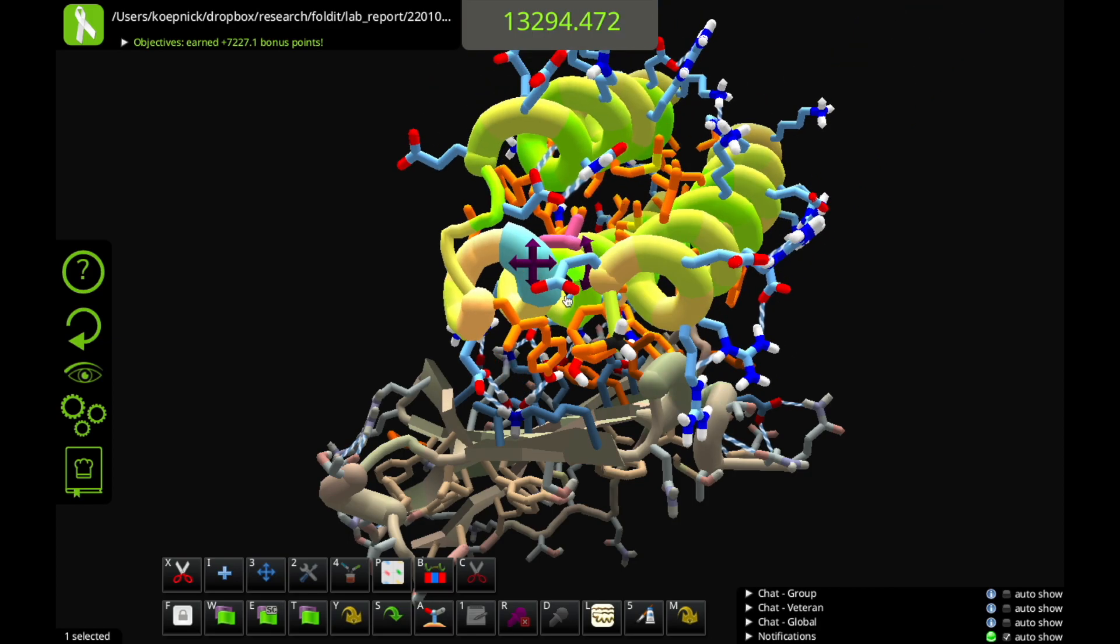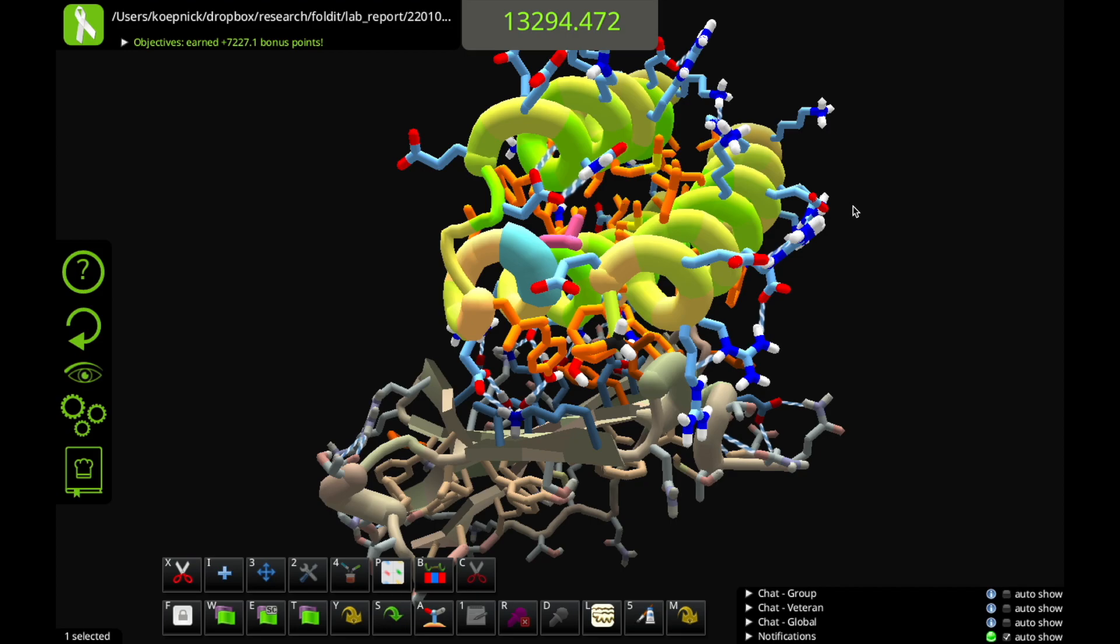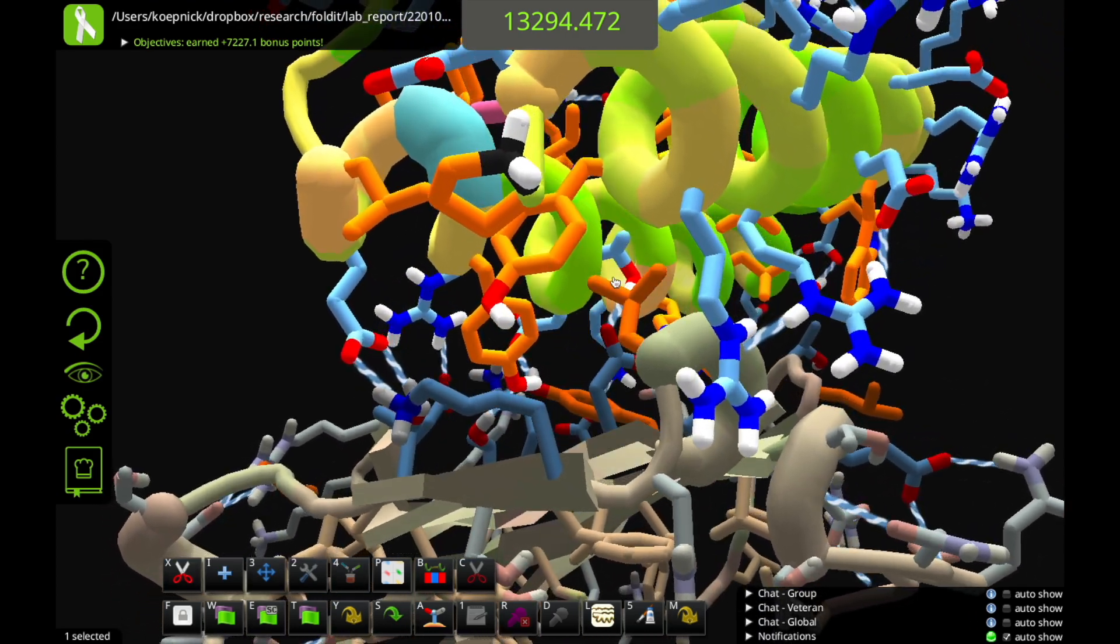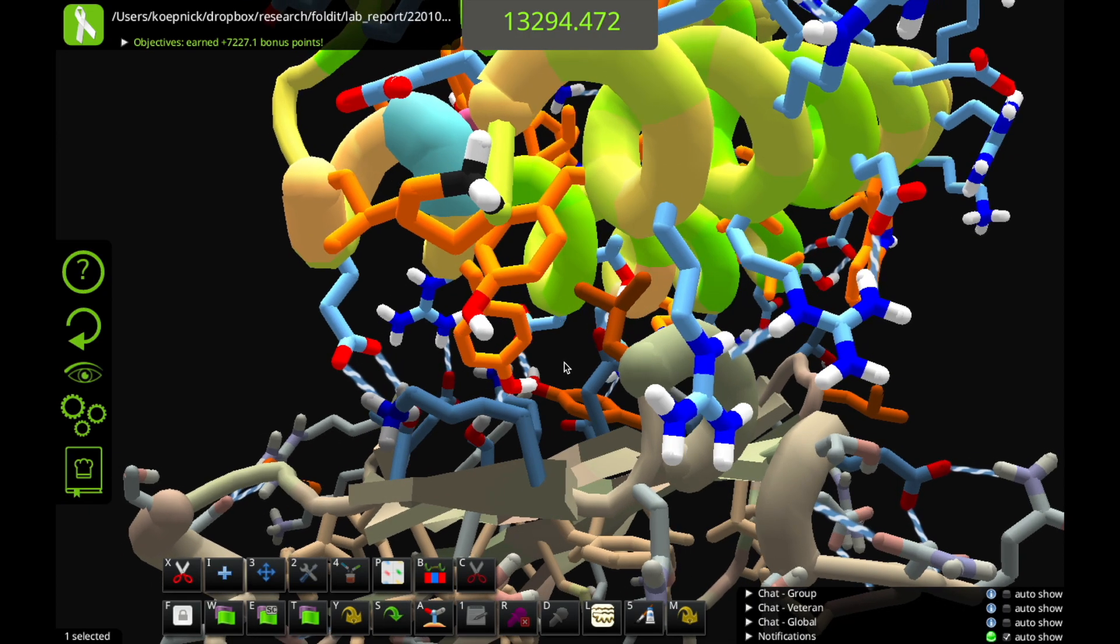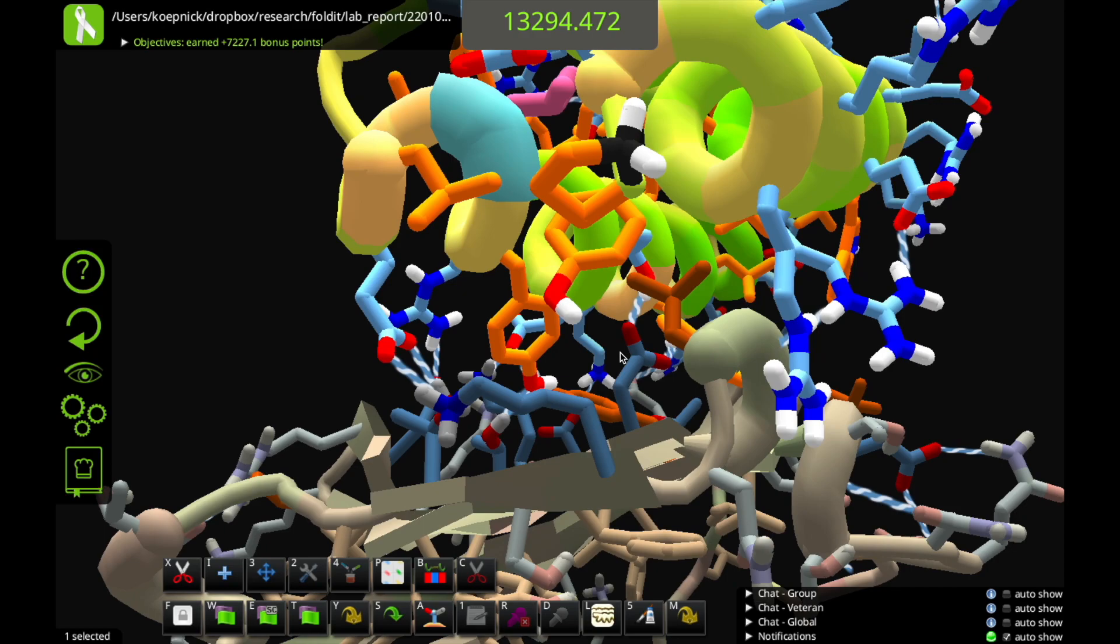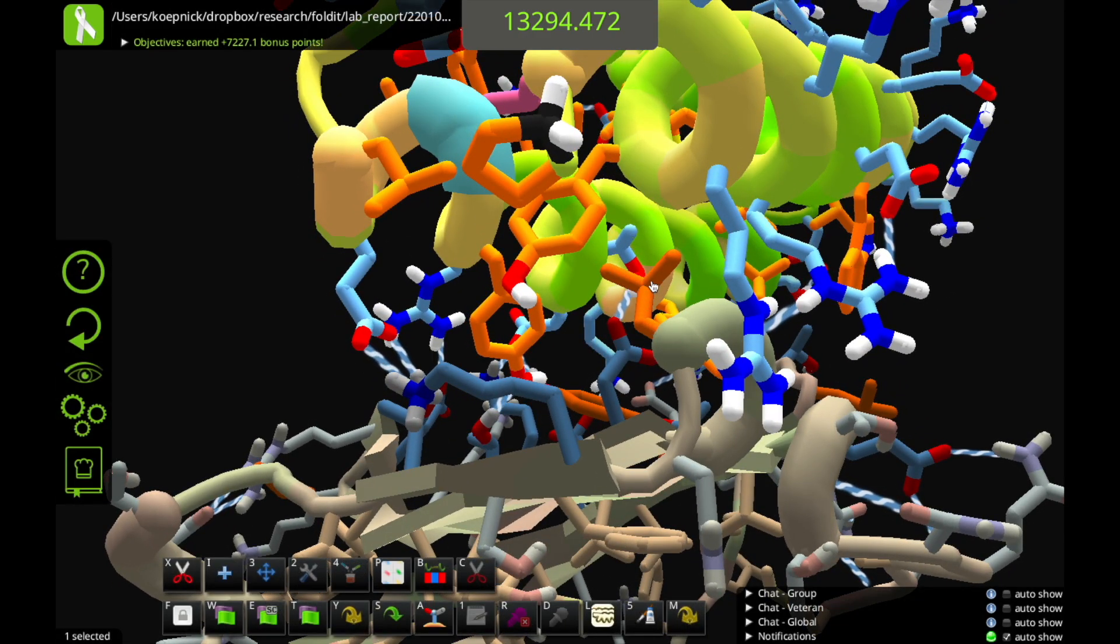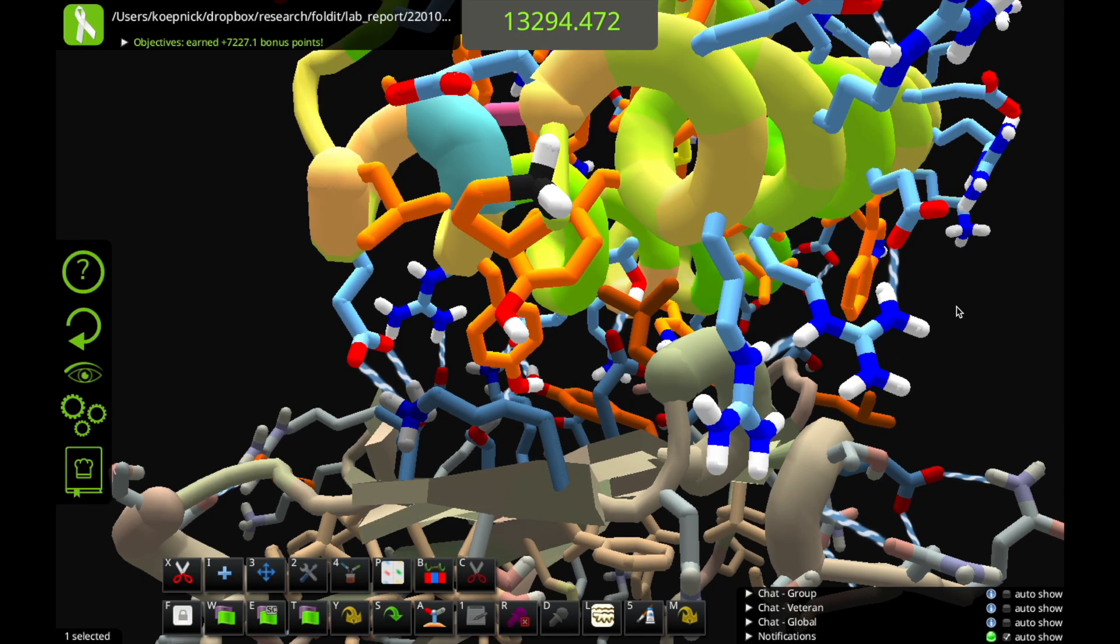So if we look at what this design has done, we see that they've created a very snug home for this exposed leucine on the target. And this is nice. This is what we like to see. This is making, this is now burying this leucine in a binding pocket on our own binder, which should make for some very tight binding interactions.